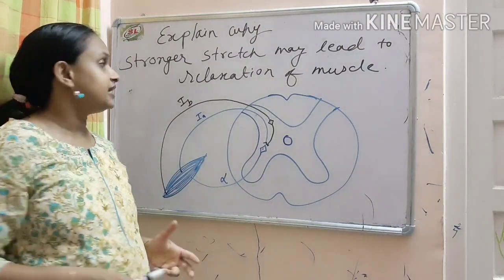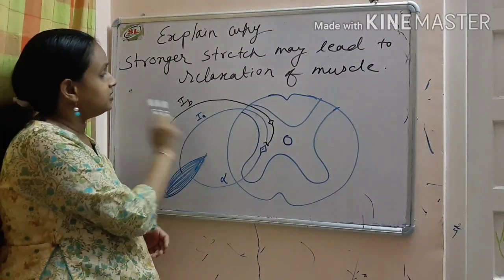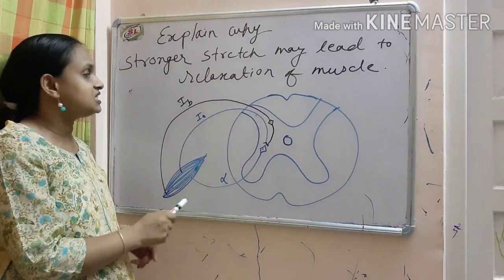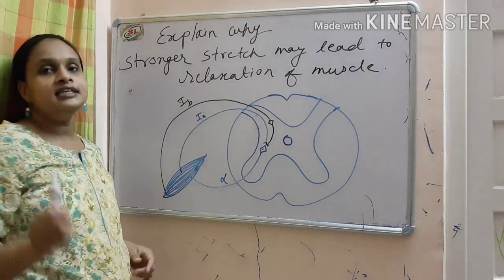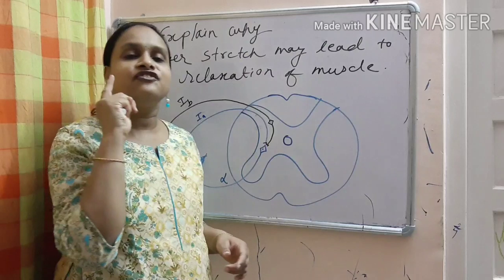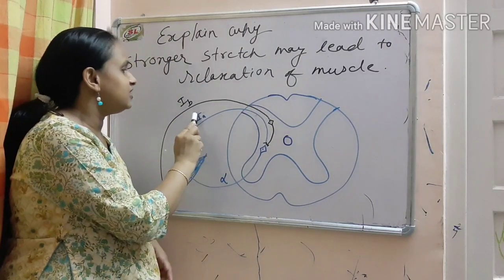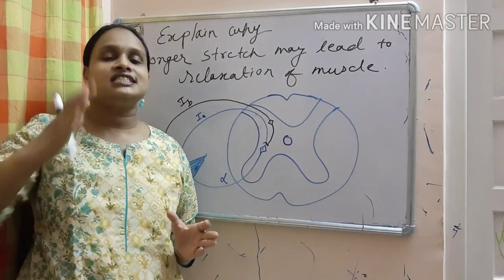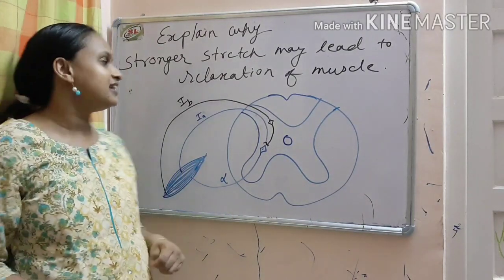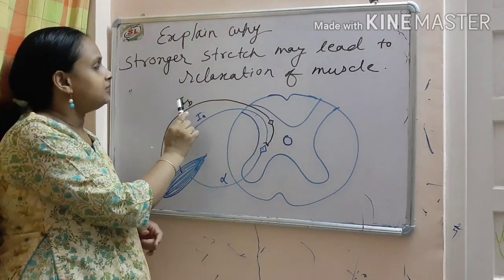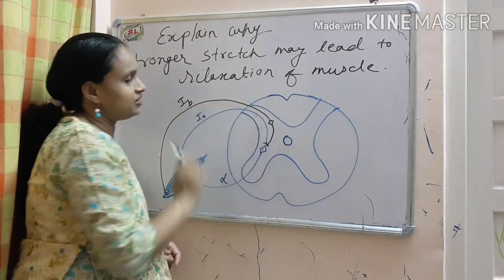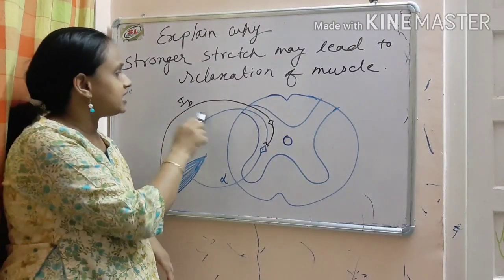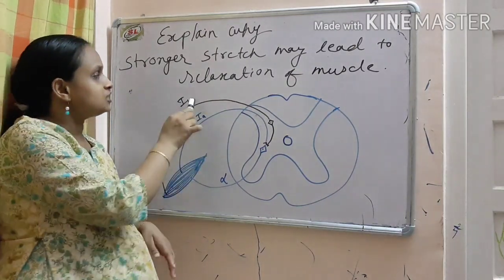And when they get stimulated, they give up into the 1B. For stretch reflex, 1A is there. For inverse stretch reflex, 1B is there. In stretch reflex, two neurons are there. So, 1A. In inverse stretch reflex, three neurons are there. So, 1B. These are sensory fiber. To remember it, I am just giving you a trick. Stretch reflex, A. Inverse stretch reflex, B.